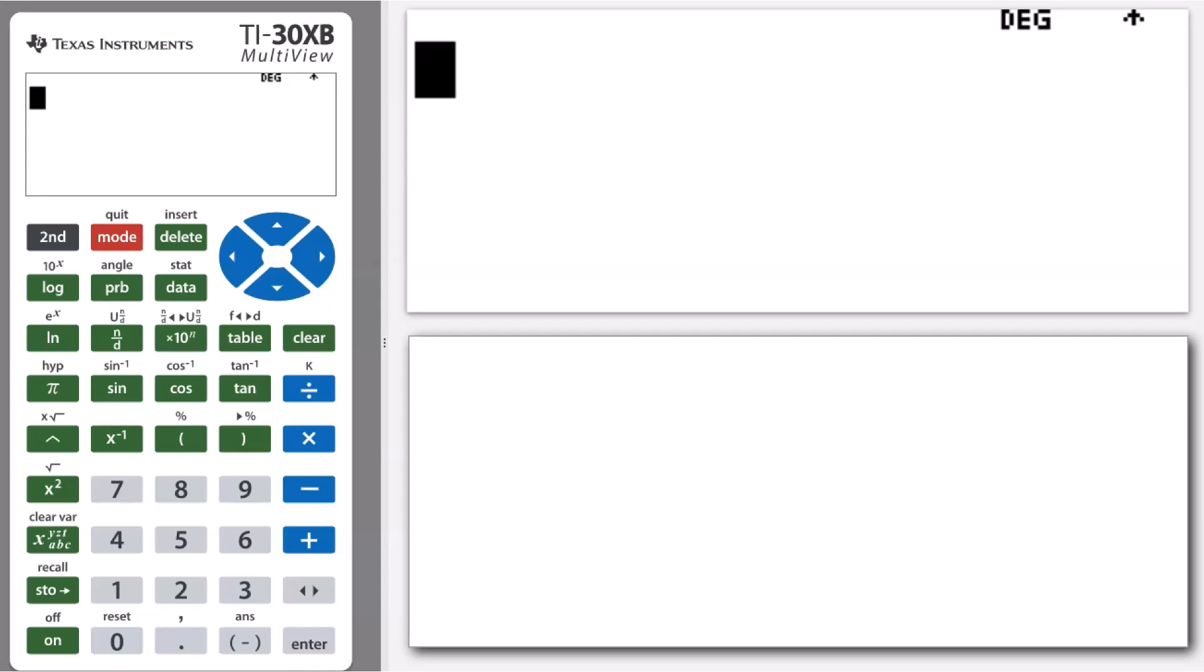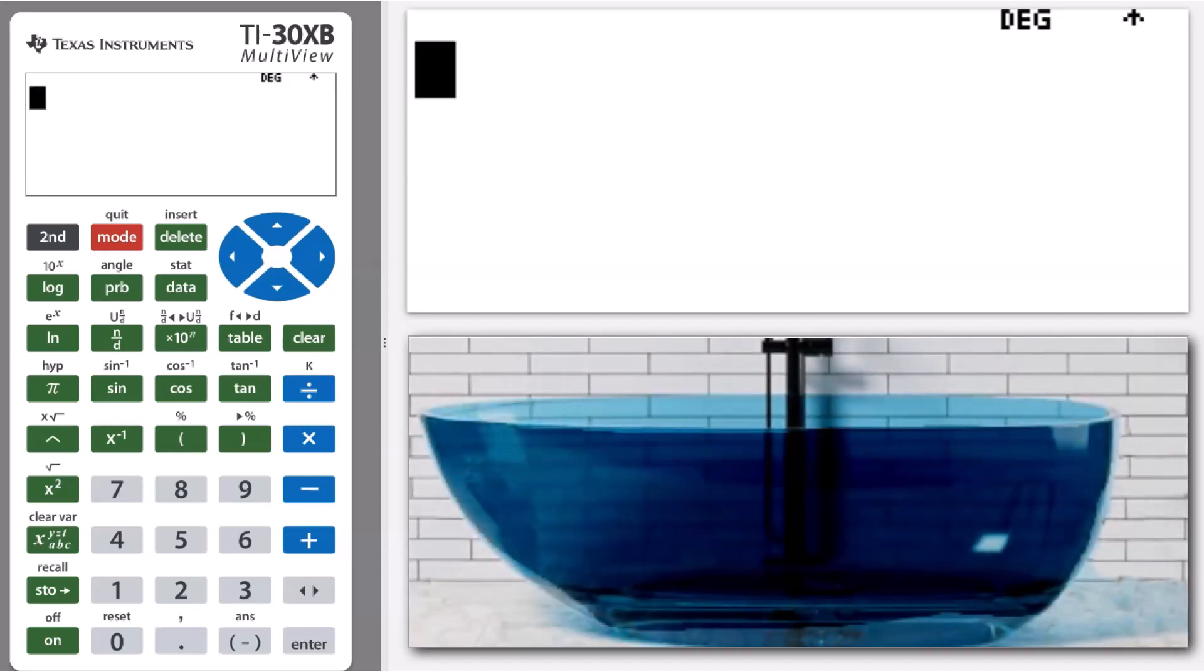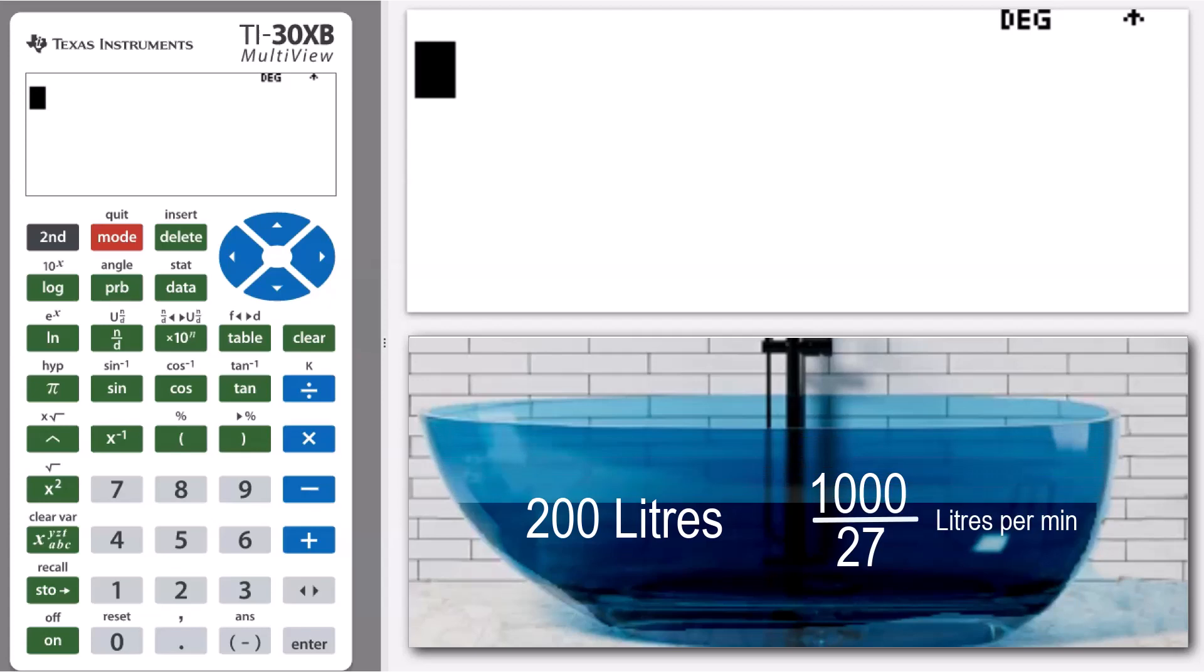So our context today that we're looking at is we have a bathtub, and our bathtub has 200 liters of water and it's being emptied at a rate of 1000 over 27 liters per minute.